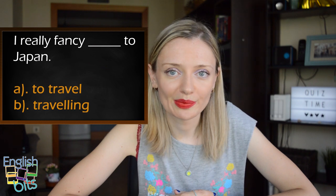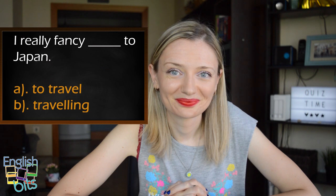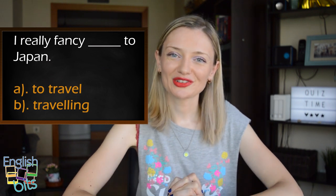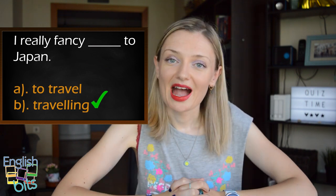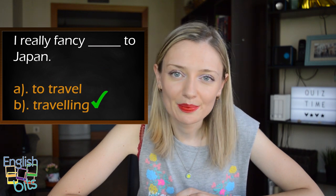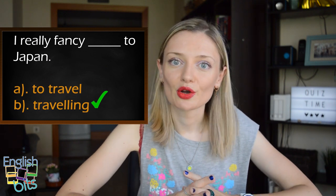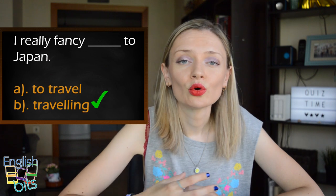Sentence number four: 'I really fancy to travel to Japan' or 'traveling to Japan.' The correct option is 'I really fancy traveling to Japan.' After 'fancy' we have to use the ing form, and the same happens with the verb 'feel like' — it means the same. So you can say 'I fancy going to the cinema tonight' or 'I feel like going to the cinema tonight.'